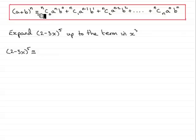it will be nc0. You can see that n is the 5. And remember, this formula only works if the power is a positive integer, which 5 is. So, our n is the 5, the b is minus 3x, and a is the 2.